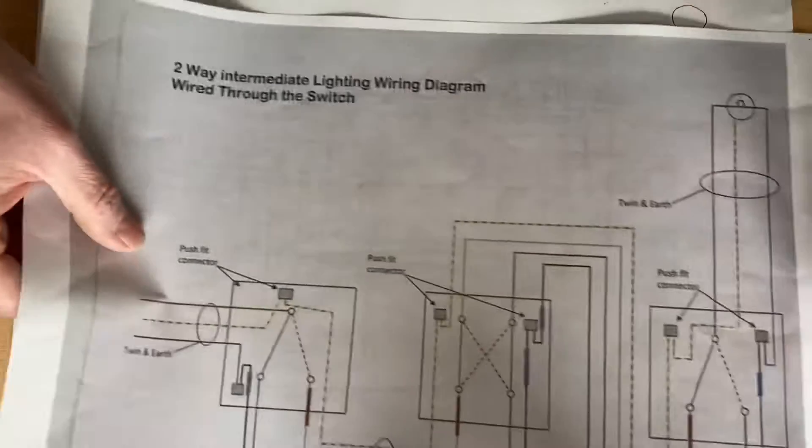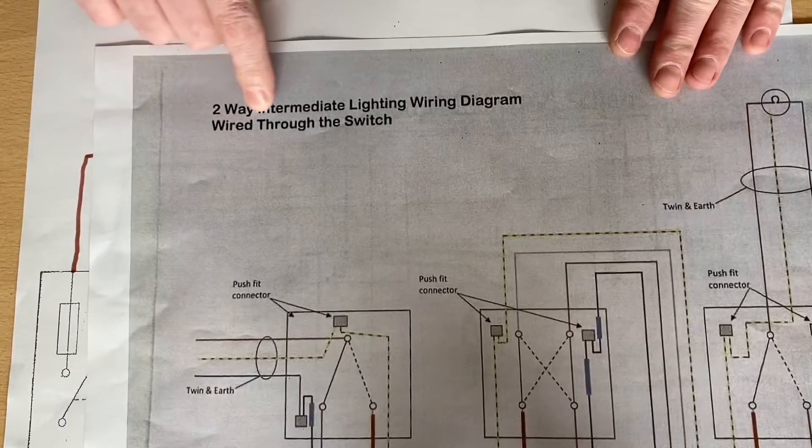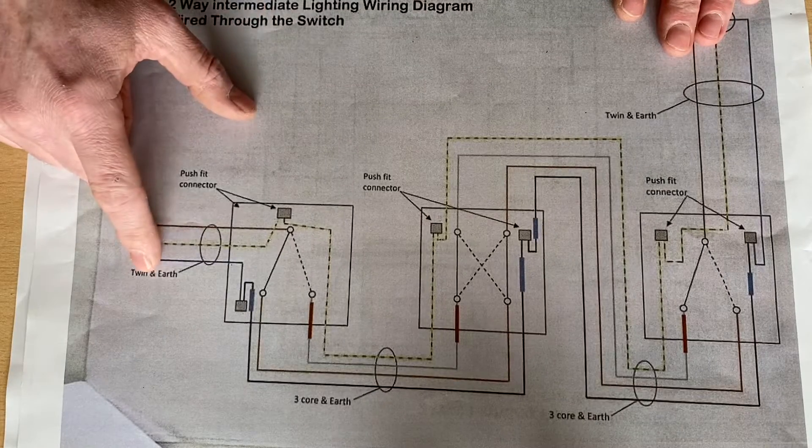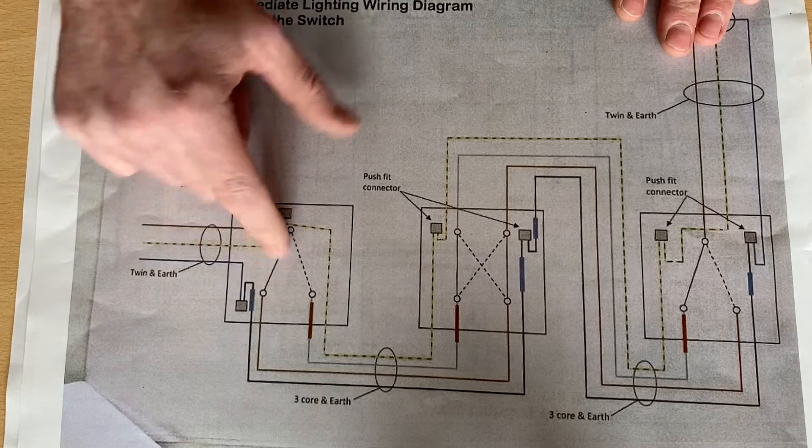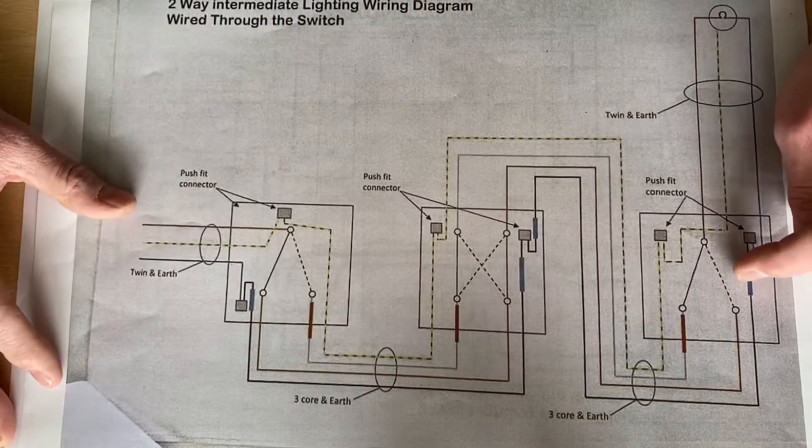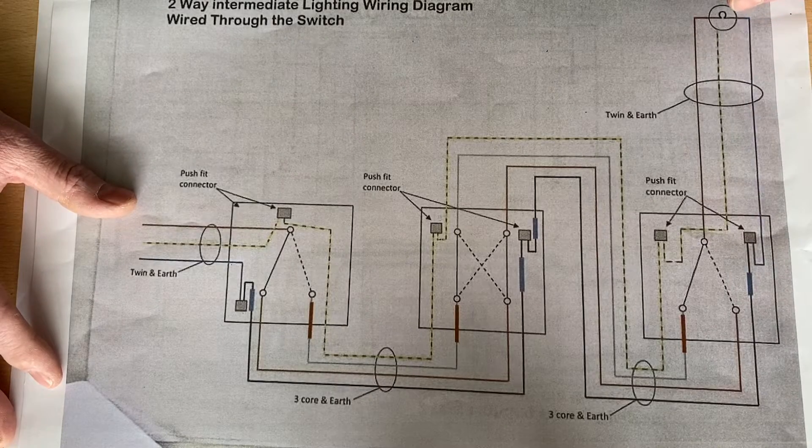This one just here, which was called wired through the switch. He brought the supply into the first two-way switch, brought a three core across to the intermediate, a three core across to the last two-way switch, and then a cable up to the lighting point itself.